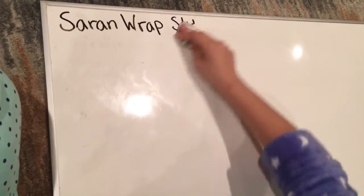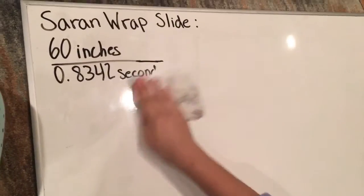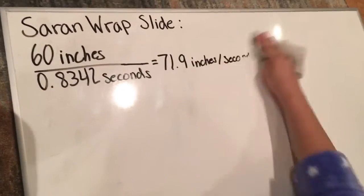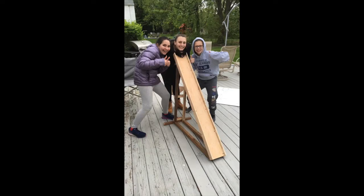And for the saran wrap slide, it is 60 divided by 0.8342, which is equal to 71.9 inches per second southwest. In all, we had a great time doing this project. Thank you.